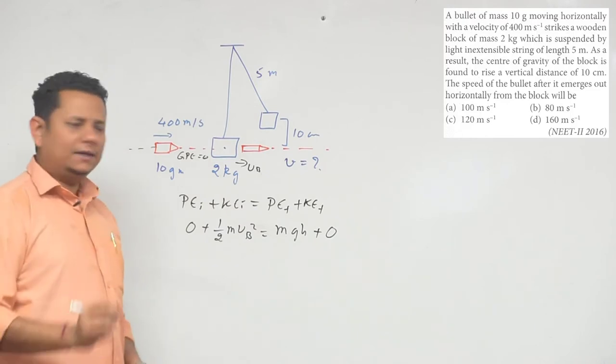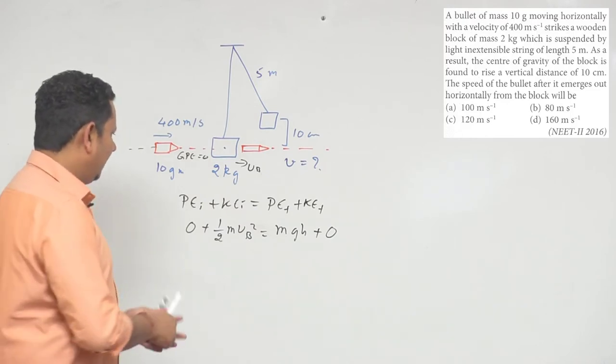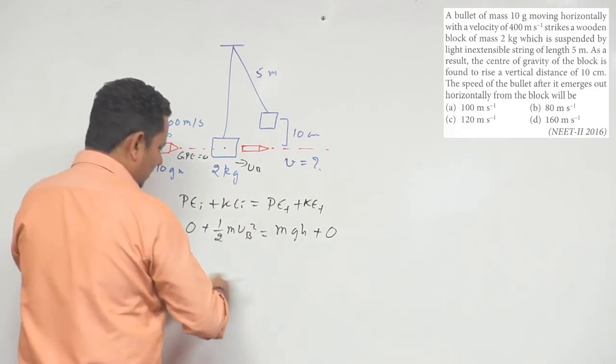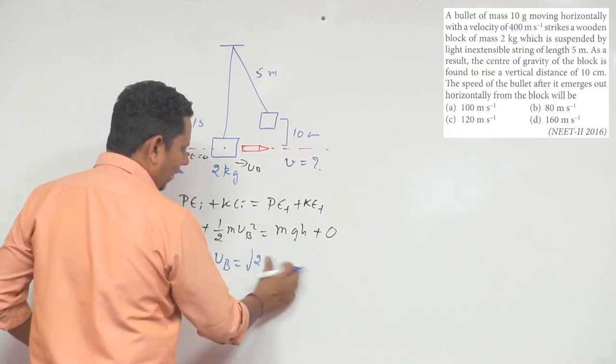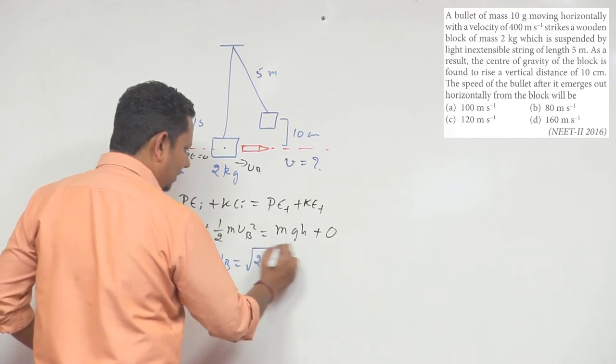we can say that velocity of block equals square root of 2gh, since m got cancelled.